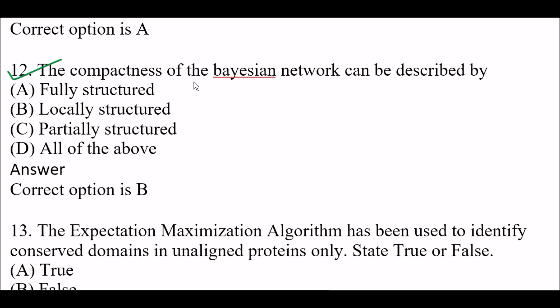Next question: The compactness of the Bayes network can be described by — Option A: Fully structured, Option B: Locally structured, Option C: Partially structured, Option D: All of the above. Right answer is Option B — locally structured. The compactness of the Bayes network can be described by locally structured.